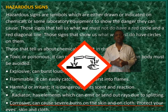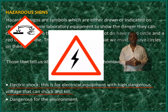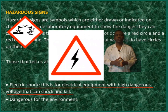Corrosive: can cause severe burns on the skin and on cloth. Protect your eyes, skin and cloth. Electric shock: this is for electrical equipment with high dangerous voltage that can shock and kill.